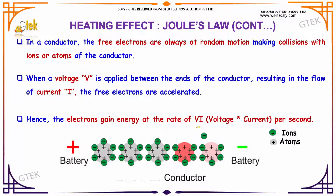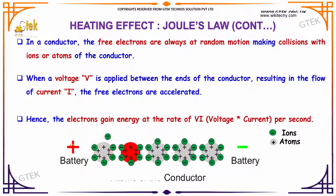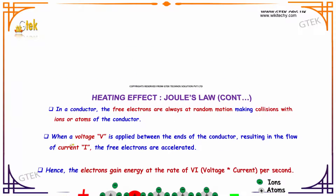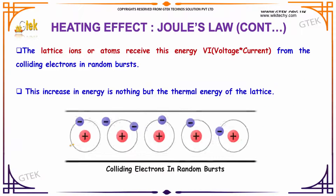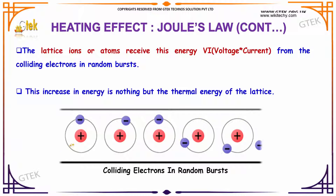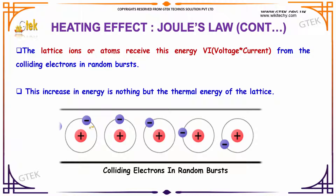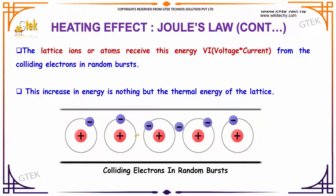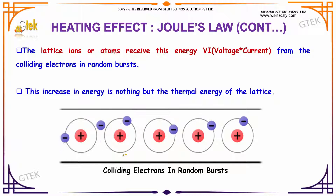You are able to see the ions moving from one position to another — this is how the current is passed. So the lattice ions receive the energy V×I from the colliding electrons in random bursts. This increase in energy is nothing but the thermal energy of the lattice. This is how the electrons collide in random bursts.